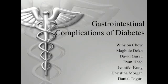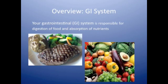Gastrointestinal Complications of Diabetes. The gastrointestinal system is a tube that extends from the mouth to the anus. It is responsible for the digestion and absorption of nutrients.